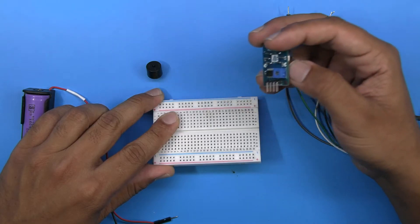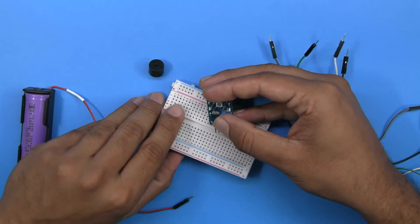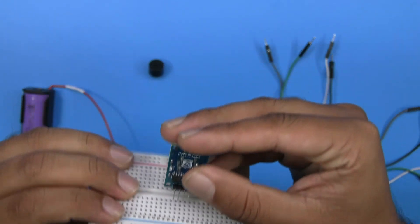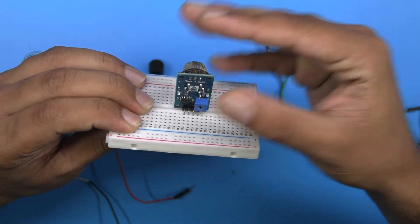Take the MQ2 gas sensor and insert its pins into the breadboard in such a way that all the pins are in parallel connections.